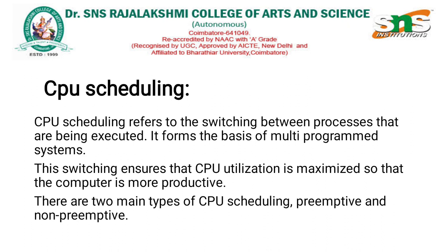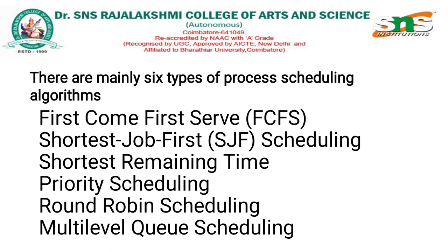There are two main types of CPU scheduling: preemptive and non-preemptive. For CPU scheduling, six types of process scheduling algorithms are used.